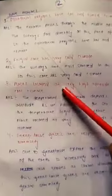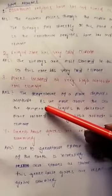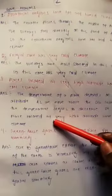Places located at very high altitude have cool climate. The temperature of a place depends on its altitude. As we move above the sea level, the temperature begins to decrease. So places located at very high altitude have cool climate.